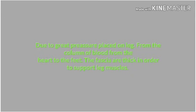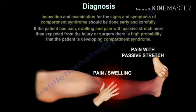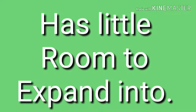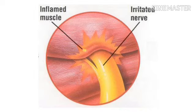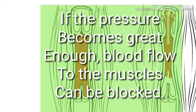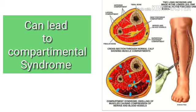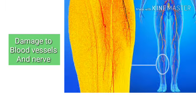Due to the great pressure placed on the leg from the column of blood from the heart to the feet, the fascia is very thick in order to support the leg muscles. This thickness can cause problems when any inflammation presents in the leg, as there is little room to expand. Blood vessels and nerves can also be affected by swelling. If the pressure becomes great enough, blood flow to the muscles can be blocked, leading to a condition known as compartment syndrome. Severe damage to the nerves and blood vessels around the muscle can cause the muscle to die, and amputation might be necessary.